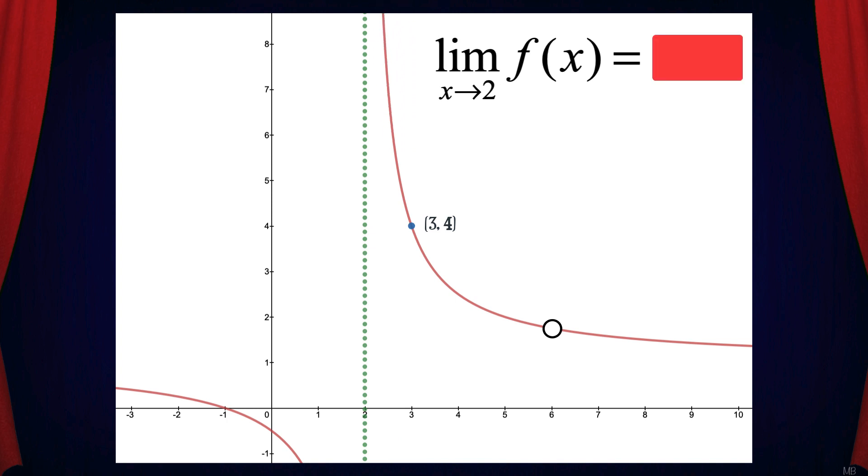But what's the limit of f of x as x approaches 2? Since the left and right-hand limits aren't the same, we can say that the limit does not exist.